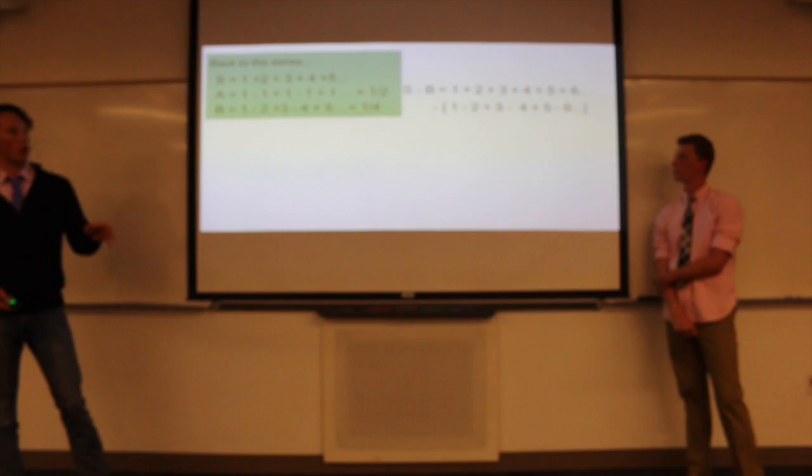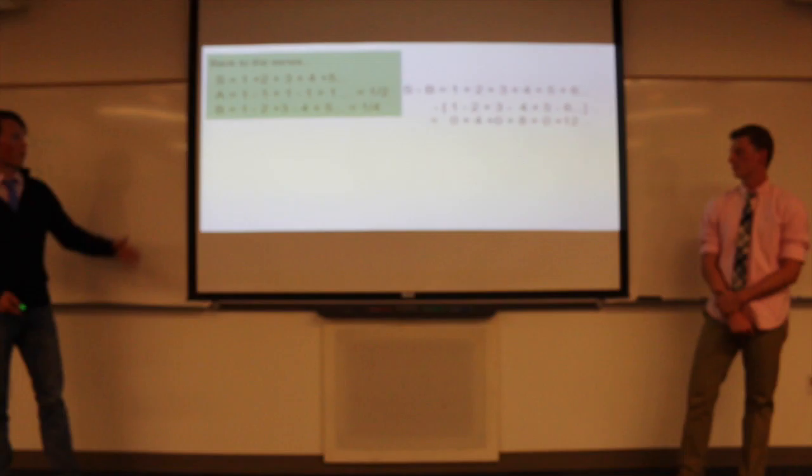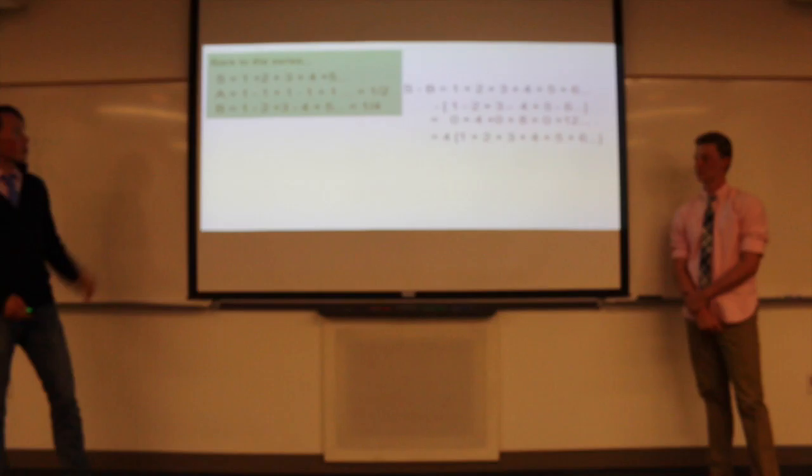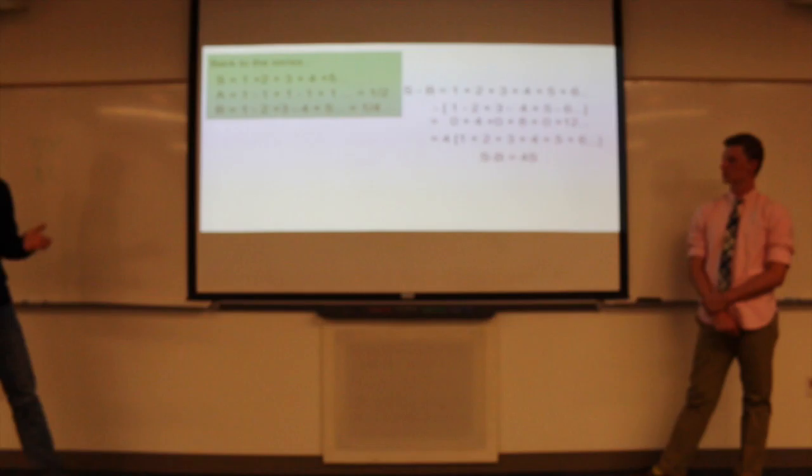And now with these in mind, we can prove our final series, the big series S. And so what we're going to do is we're going to take S and we're going to subtract B from it. So 1 plus 2 plus 3 plus 4 minus 1 minus 2 plus 3. And that's going to leave us with 0 plus 4 plus 0 plus 8 plus 0 plus 12 plus 0 onward and so forth.